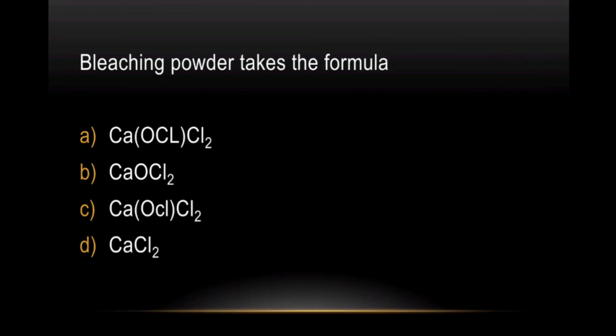Question: Bleaching powder formula — there are many confusions among students. It contains Calcium, Oxygen, and Chlorine. That is the formula for bleaching powder.